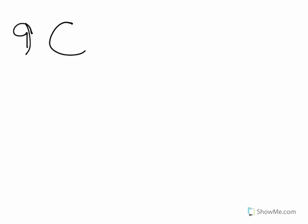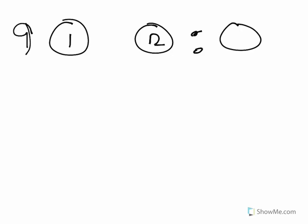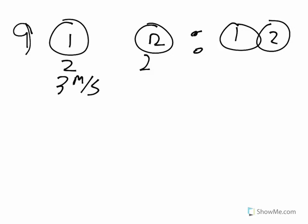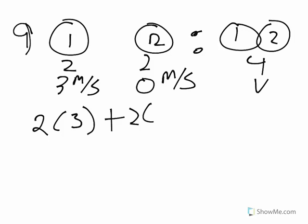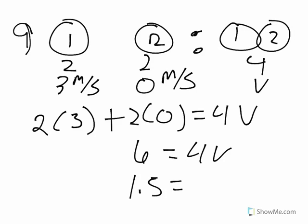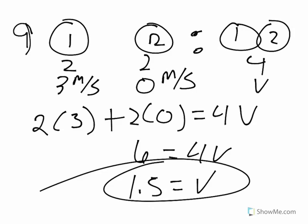Number nine: a two kilogram blob of putty moving at 3 meters per second slams into a two kilogram blob of putty at rest. What is the speed of the stuck-together putty after colliding? One blob is 2 kilograms at 3 m/s and the other is 2 kilograms at 0. Afterwards it's 4 kilograms at unknown speed V. We get 2 times 3 plus 2 times 0 equals 4V, so 6 equals 4V, giving V equals 1.5 meters per second.